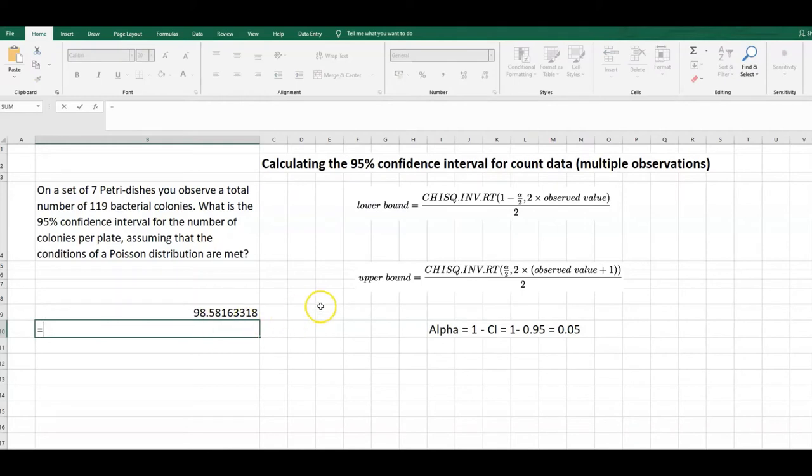We can do that now for the upper limit. Again, we start with CHISQ.INV.RT. The equation is slightly different here. We have 0.05 divided by 2. Comma, 2 times, and we've got 119 plus 1. We need to close that bracket and the full bracket divided by 2.